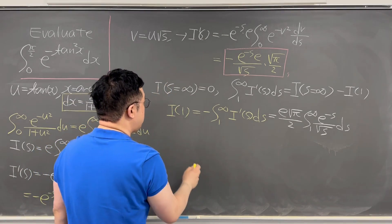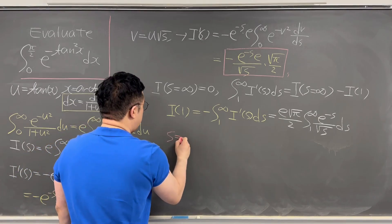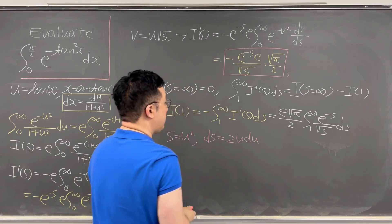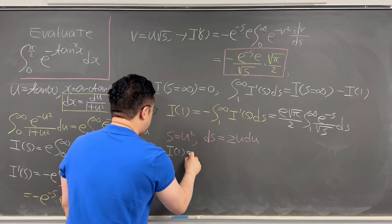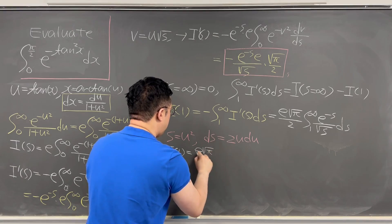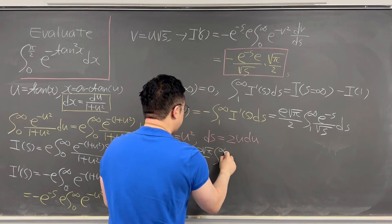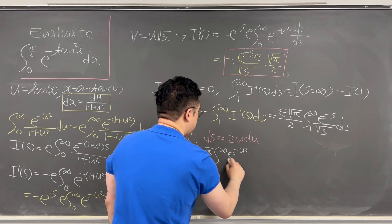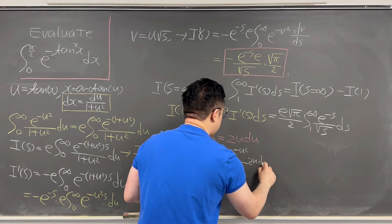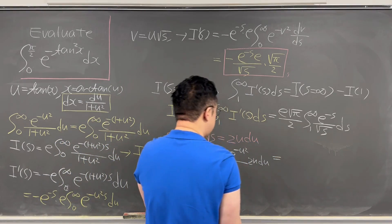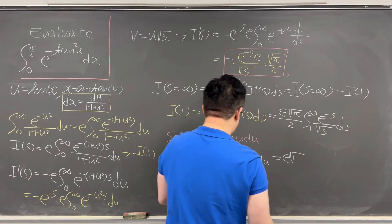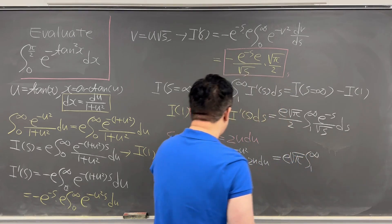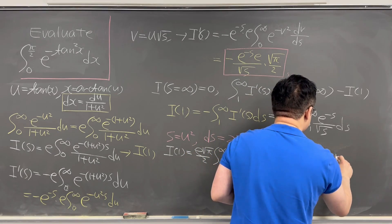For the last substitution, I'll substitute s = u squared, so ds equals 2u du. Using this, I(1) becomes e times square root of π over 2, times the integral from 1 to infinity of e to the power of negative u squared over u, times 2u du. This simplifies to e times square root of π, times the integral from 1 to infinity of e to the power of negative u squared, du.